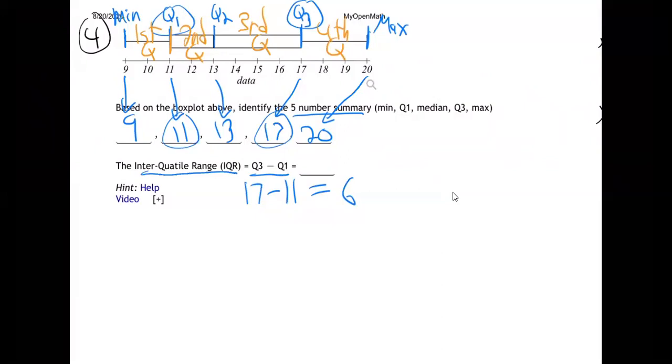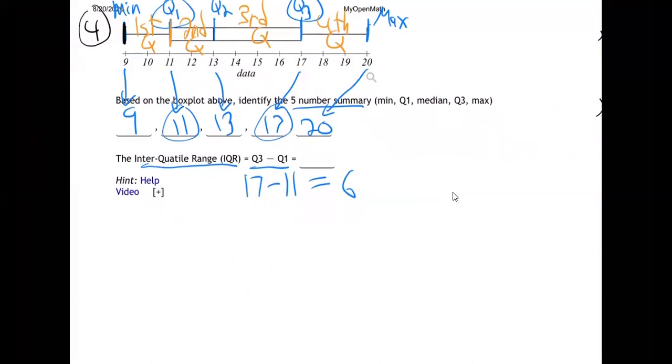So Q1, Q2, Q3 are the end of the first quarter, end of the second quarter, and end of the third quarter, respectively. And then the lowest score is the minimum, and the highest score is the maximum, and the one in the middle we call the median.